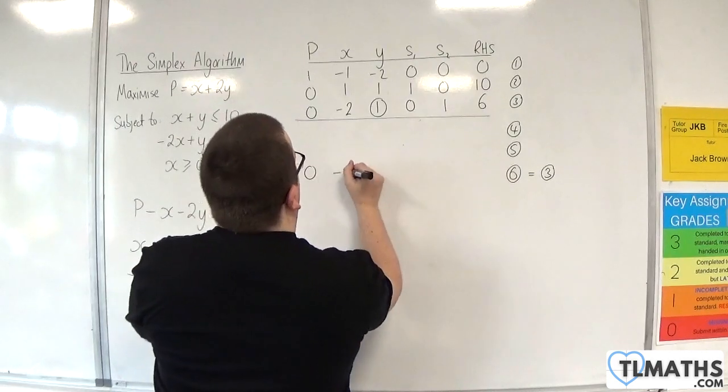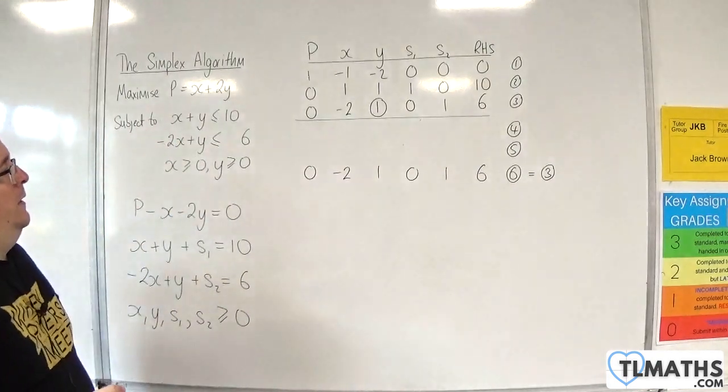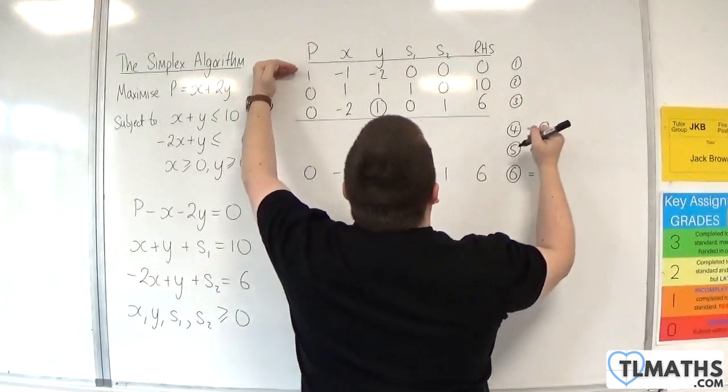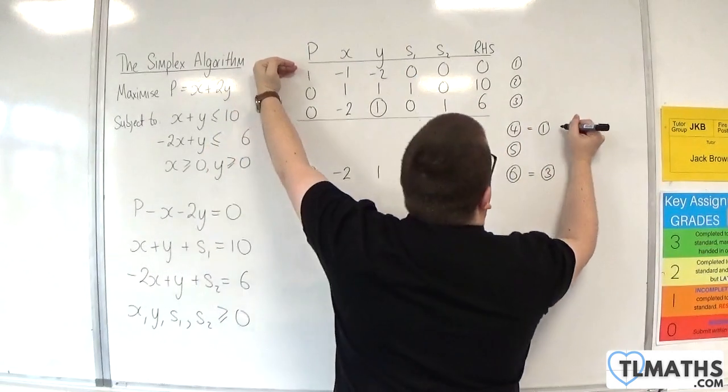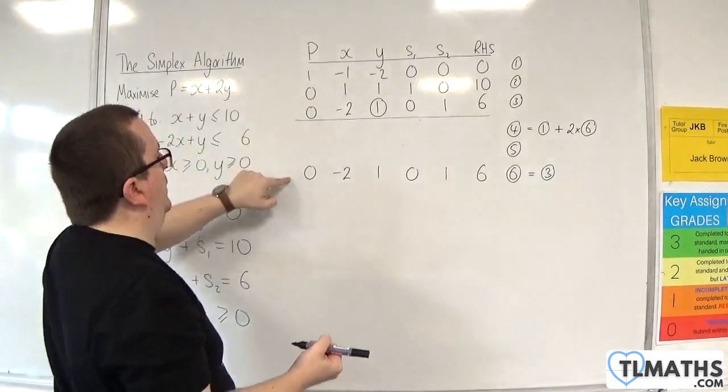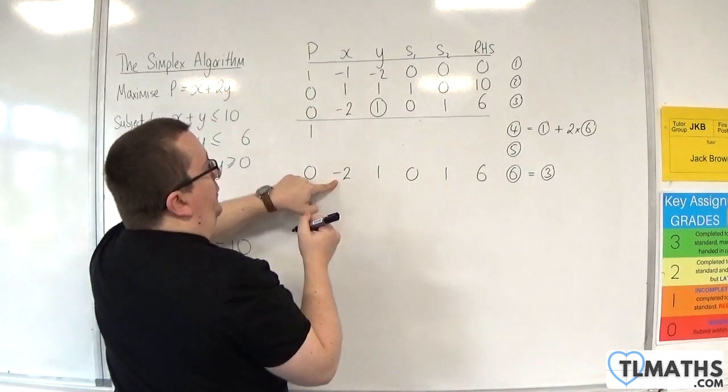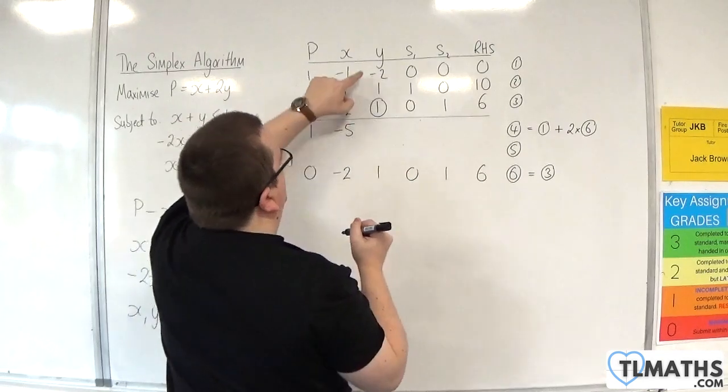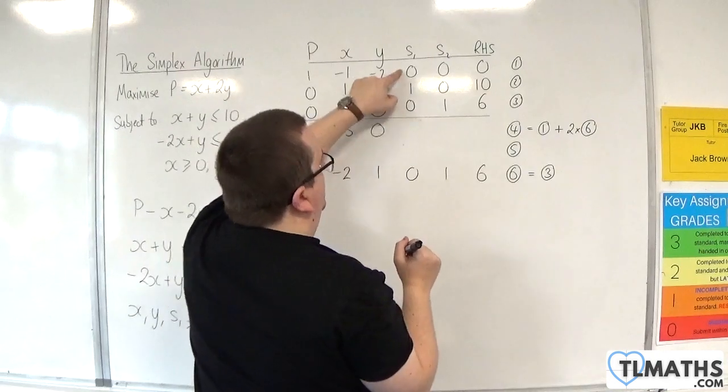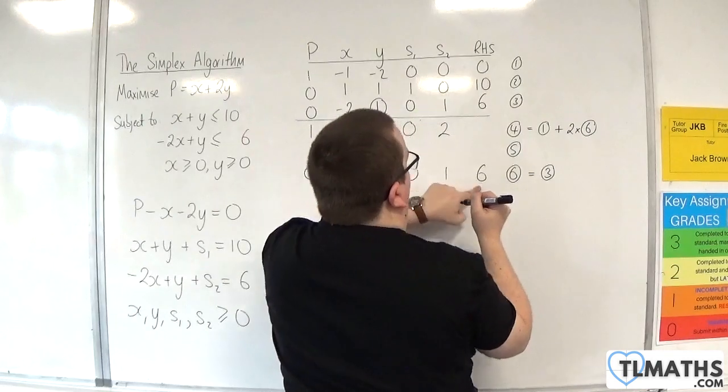So we're going to have 0, minus 2, 1, 0, 1, 6. So if I do row 1 and add on 2 lots of row 6, I'm going to have 1 plus 2 lots of 0. Minus 1 plus 2 lots of minus 2, so that would be minus 5. Minus 2 plus 2 lots of 1 is 0 by design. 0 plus 2 lots of 0. 0 plus 2 lots of 1. 0 plus 2 lots of 6.